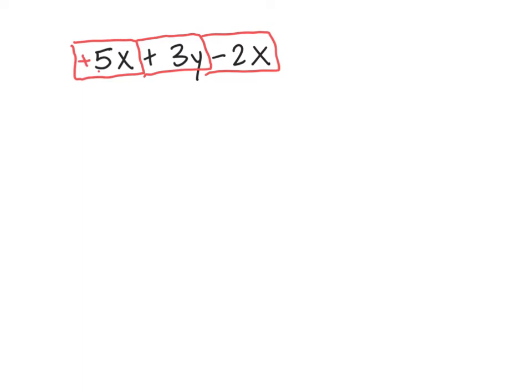Now I put together any like terms. I'm looking for the same variable raised to the same power. You'll notice 5x and negative 2x are like terms. Put those together: I have 5x and I'm taking 2x away — that's 3x. And I still have that 3y there. That's all I can do until somebody tells me what x is and what y is. That's combined; that's simplified.